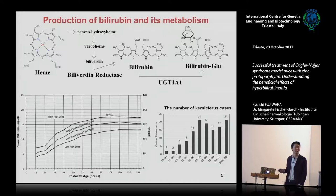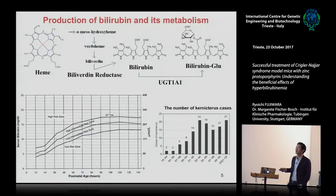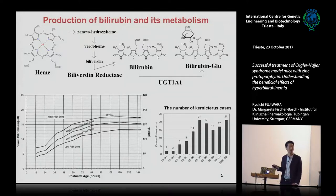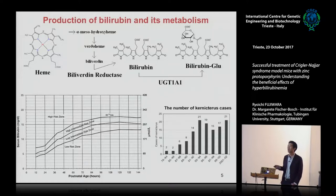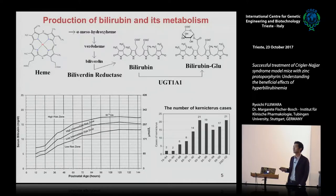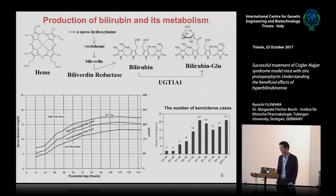Somehow, human neonates physiologically develop mild jaundice — elevated serum bilirubin levels. Right after birth, serum bilirubin levels go up and it lasts for a few weeks. It is okay because this is a natural process, and bilirubin levels go down after a few weeks. But sometimes, if you have super high bilirubin, it can go inside the brain and that develops kernicterus — a very severe case of brain damage. The number of kernicterus cases is actually increasing recently, so this is a very important issue for our research area.